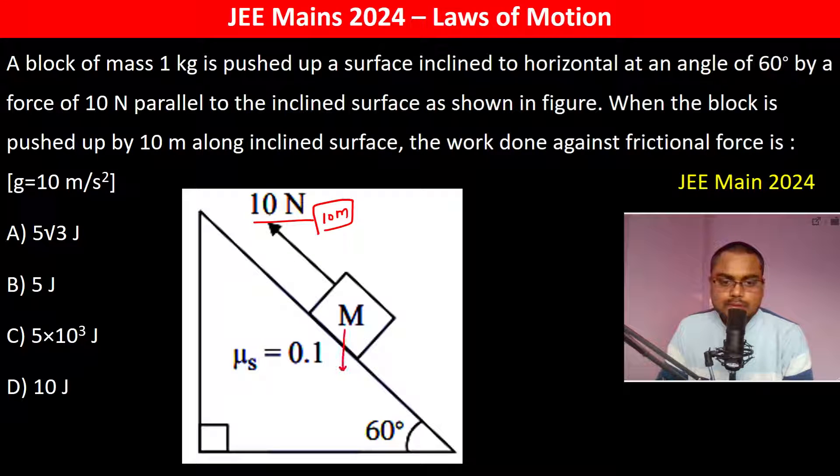So friction - this is going to be mg sine theta. This is going to be mg cos theta.